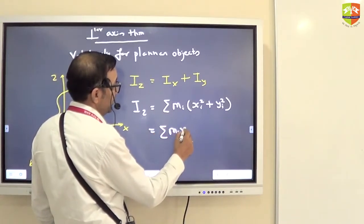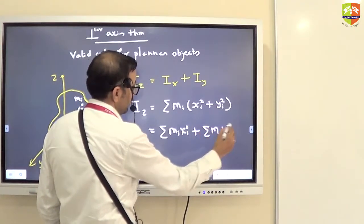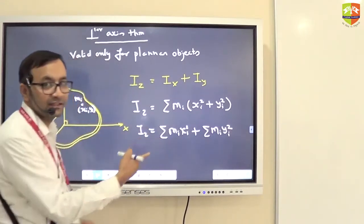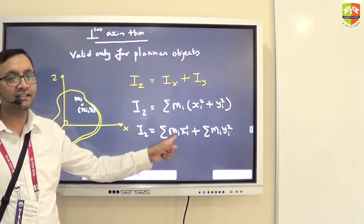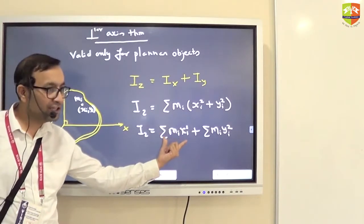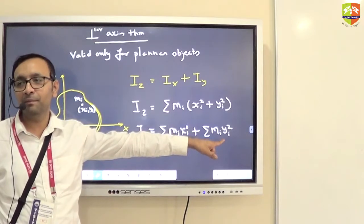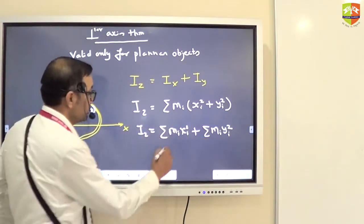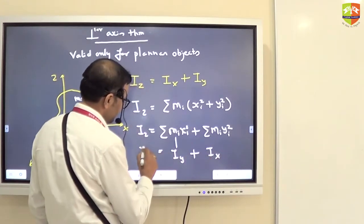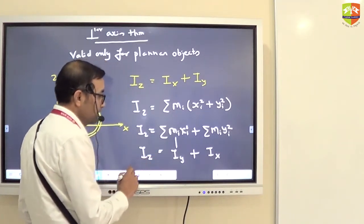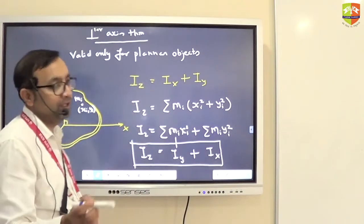Just one step away from the proof. What is this? Tell me, what is xi perpendicular distance of the point from which axis is xi? y axis, summation of mi xi squared is I_y. And what is the yi coordinate from which axis is perpendicular distance? x axis. So this is your I_y and that is your I_x. So this is the proof of perpendicular axis theorem.